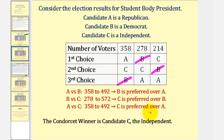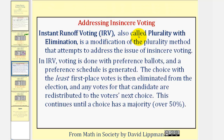Now let's introduce the instant runoff method, which is meant to address insincere voting. Instant runoff voting, also called plurality with elimination, is a modification of the plurality method that attempts to address the issue of insincere voting. In IRV, voting is done with preference ballots and a preference schedule is generated. The choice with the least first place votes is then eliminated from the election, and any votes for that candidate are redistributed to the voter's next choice. This continues until a choice has a majority, or over 50% of the votes.